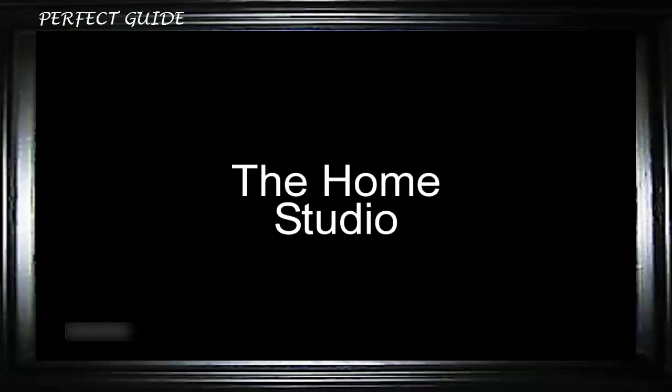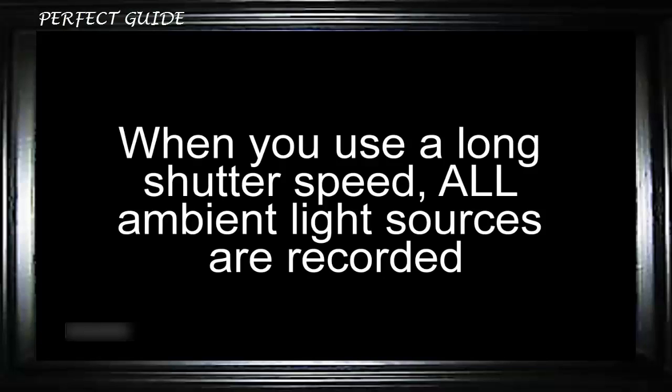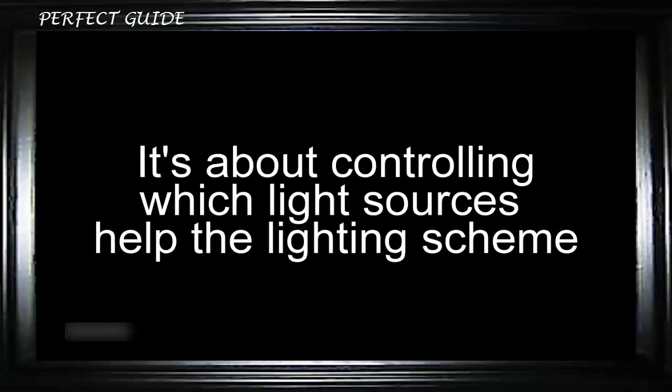Let's say you have a home studio — the living room of your house — with lots of window lights, living room lamps, ceiling light fixtures, and so on. If you use a long shutter speed, all of those ambient light sources are going to be contributing to your picture. Generally, when doing studio portrait photography, you don't want that — you want to control all the light from the strobe units you're setting up.